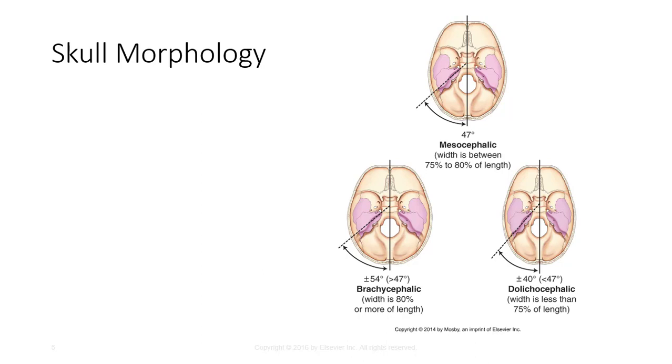Brachycephalic skull shapes are shorter from front to back and wider side to side. Dolichocephalic skulls are longer and thinner.